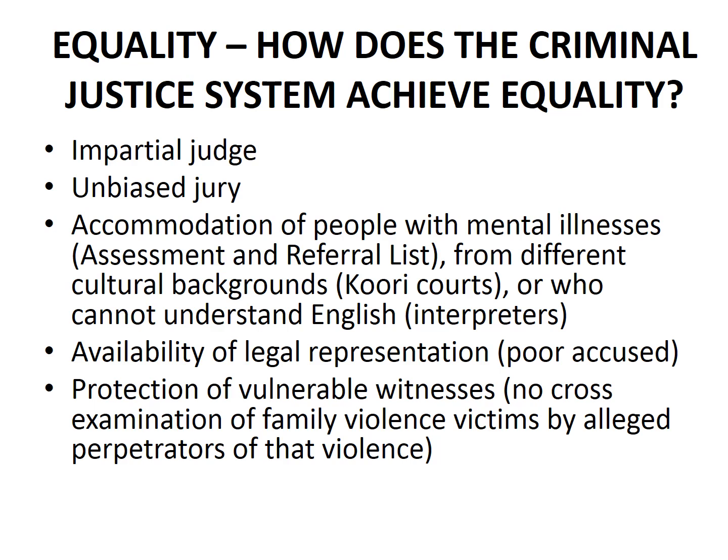Secondly, we have hopefully unbiased juries. We try to get unbiased juries through selecting the 12 men and women who form the jury from the electoral roll at random. In that way, even though individual jurors might have bias, it's unlikely that a majority of the jurors share the same bias. That means we're more likely to have a jury which treats both the prosecution case and the accused case equally.